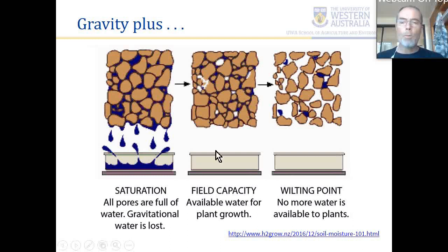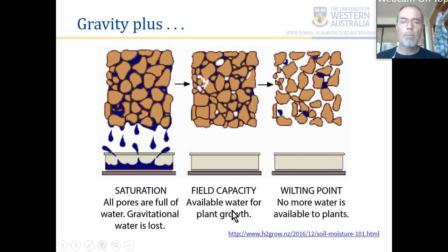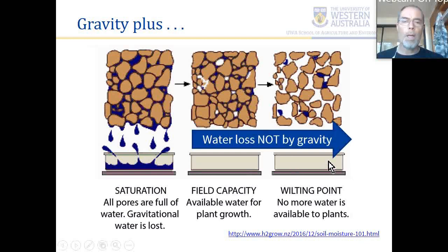A saturated soil has pores completely full of water. What we call gravitational water is lost, resulting in a soil at field capacity — water moving from high gravitational potential to the lowest possible point, which in a soil is probably the groundwater. Field capacity is the upper limit of available water for plant growth; plants cannot extract water if the water content is equivalent to the wilting point.